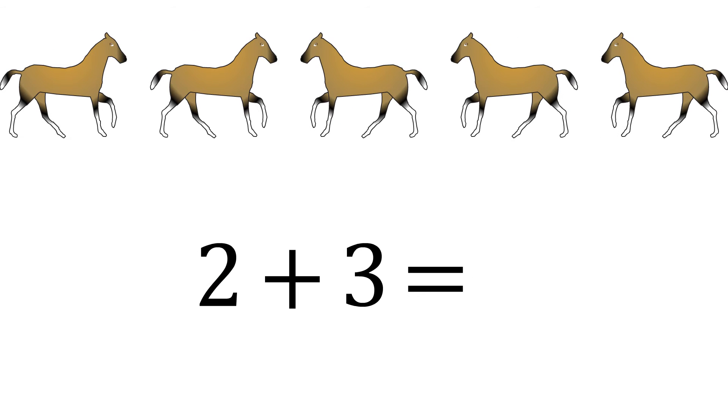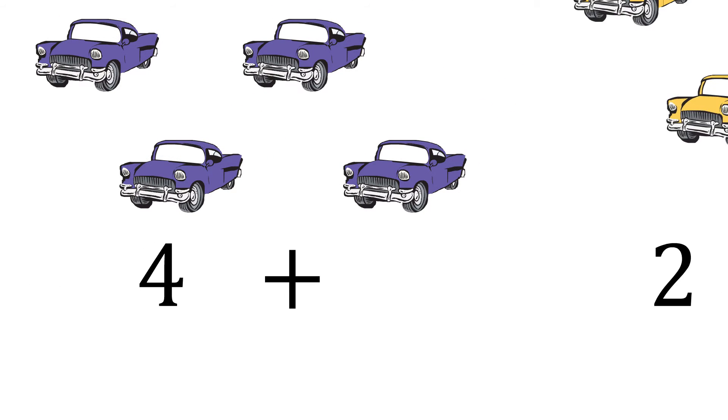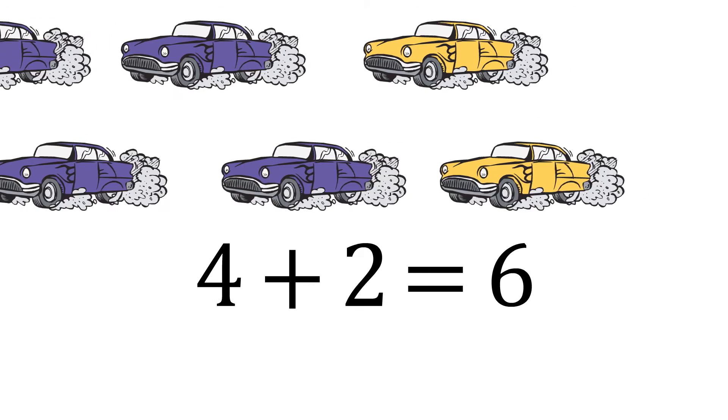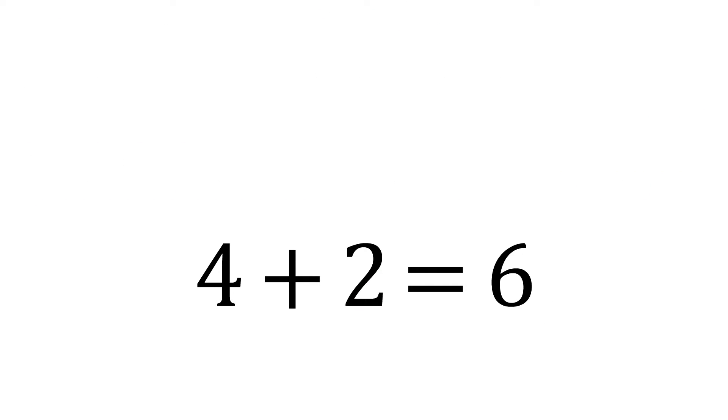What is addition? When you add, you just put things together. Two horses plus three horses equals five horses. When you add four cars plus two cars, you get six cars. Four plus two equals six.